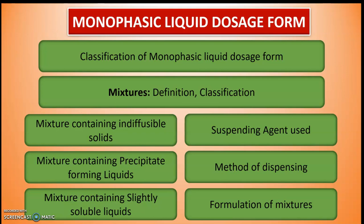For suspending agents used in mixture formulas, you should know whether to use Compound Powder of Tragacanth (CPT) or Tragacanth mucilage, in what concentration each should be used — this is important in theory and practicals. Next, the method of dispensing of mixtures is important. You should know the general method and also be able to give one example of a mixture along with its method of dispensing.